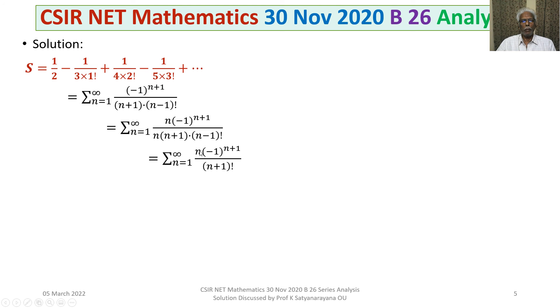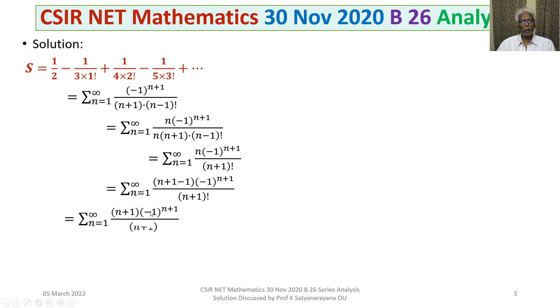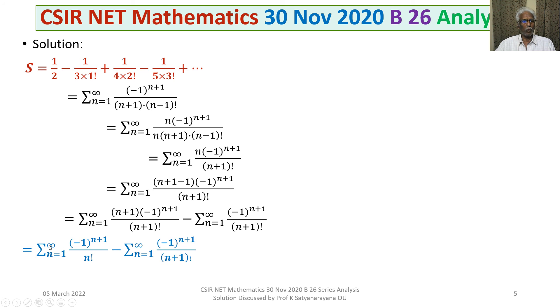In the numerator, in place of n we write n plus 1 minus 1. We then separate the numerator: n plus 1 minus 1 gives us minus 1 to the power of n plus 1 divided by n plus 1 factorial, as a sigma. In the next term, n plus 1 cancels with part of the denominator, leaving n factorial terms. We continue in the next slide.